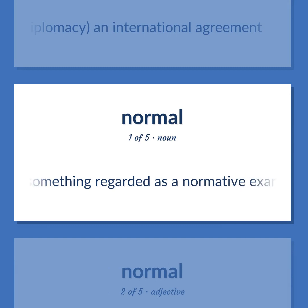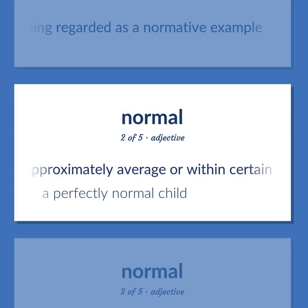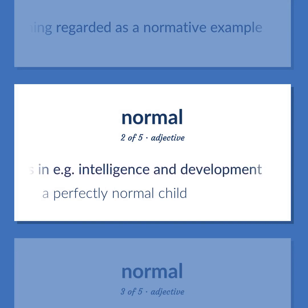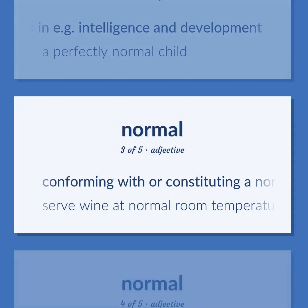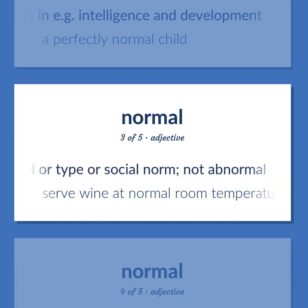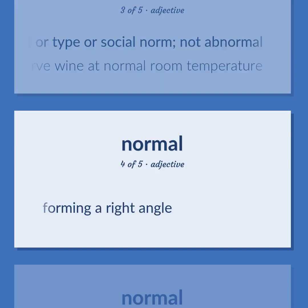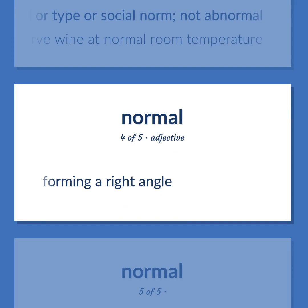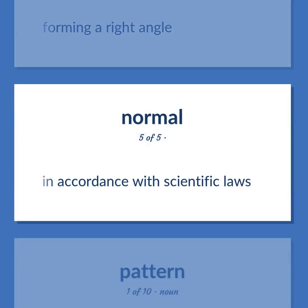Convention: something regarded as a normative example. Normal: being approximately average or within certain limits in intelligence and development — a perfectly normal child. Conforming with or constituting a norm or standard — not abnormal, normal — serve wine at normal room temperature. Forming a right angle. In accordance with scientific laws.